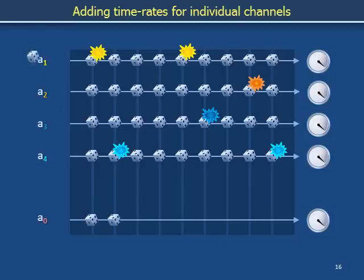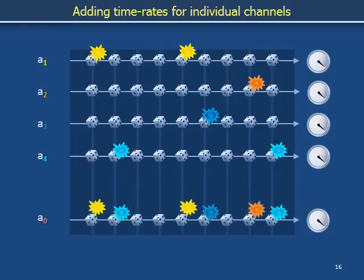The temporal densities of these yellow, orange, dark blue, and light blue reactions across these timelines together give the temporal density of any reaction occurring, as illustrated using pink explosions along the timeline at the bottom. The time rates A1, A2, A3, and A4 add up to give A0, the time rate of any reaction occurring.